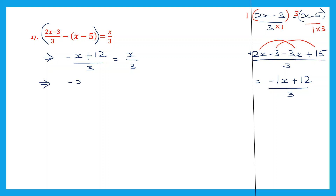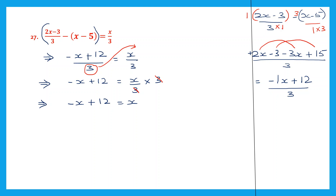On the left hand side let's leave minus x plus 12 as it is. On the right hand side let's leave x by 3 also as it is. And let's transpose this 3, which is division, to the right hand side — it becomes multiplication into 3. Now I can cancel this 3 and this 3. So what I have left is only x. So now: minus x plus 12 equals x. Now let's move all the x to the right hand side. So we have minus x here — let's transpose this to the right hand side, it's going to become plus x.